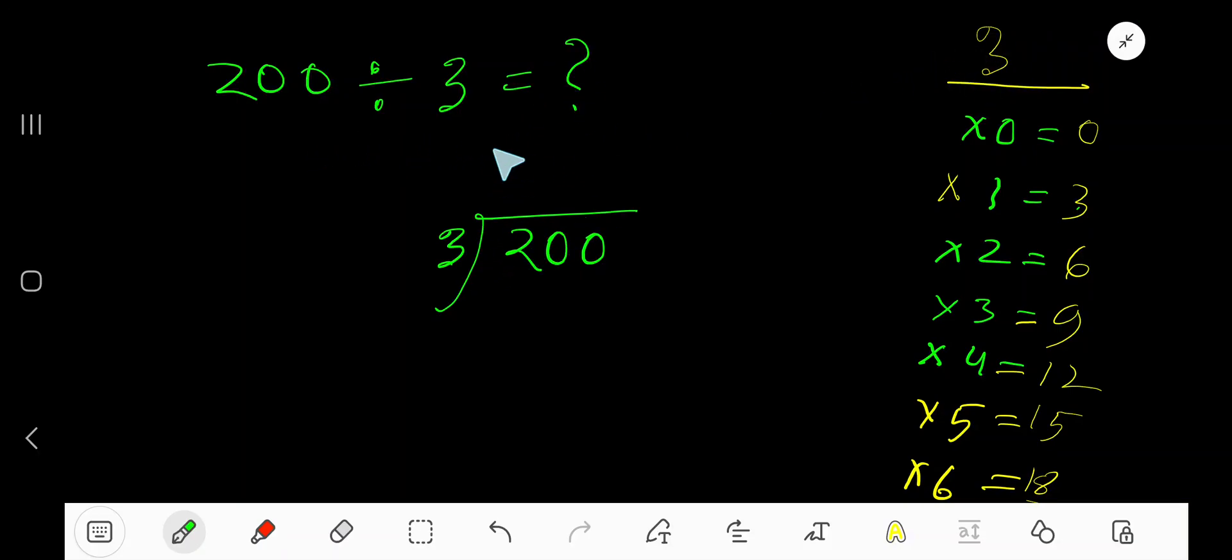200 divided by 3. Here 3 is a divisor, so we need the multiplication table of 3.